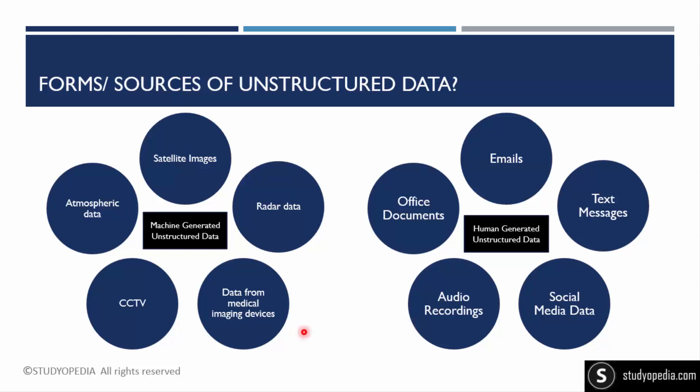Let's focus on machine-generated unstructured data first. Satellite image data is used by Google Maps to track live traffic data. For medical imaging devices — ECG, EEG, MRI — all this data comes in the form of 2D or 3D images, which are hard to structure. CCTV surveillance data is monitored by law enforcement and administration.